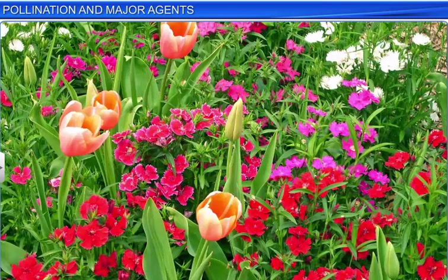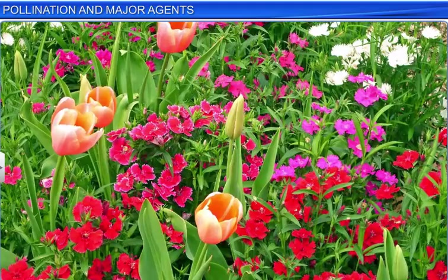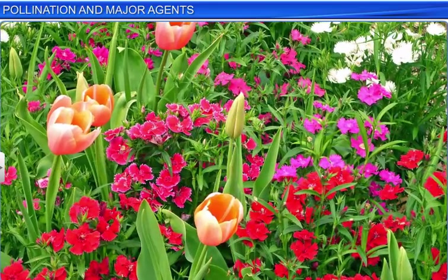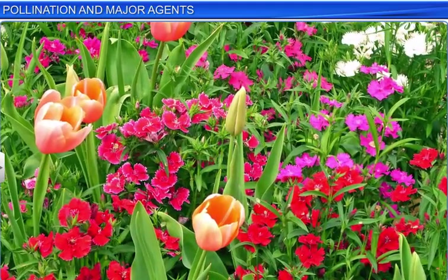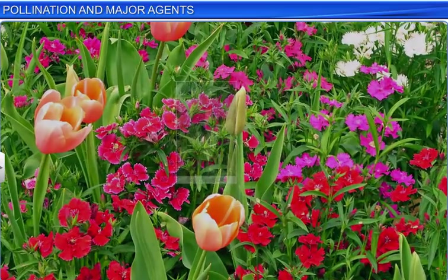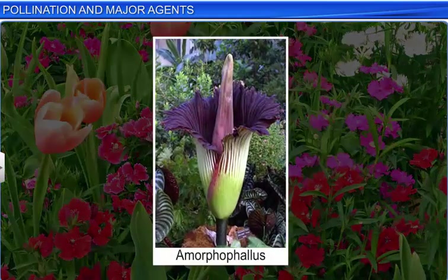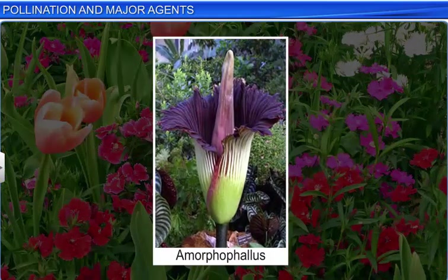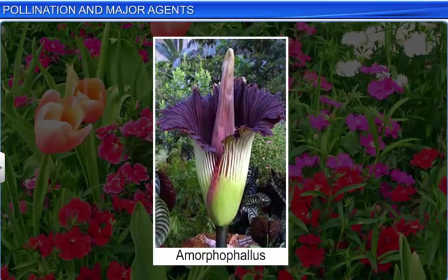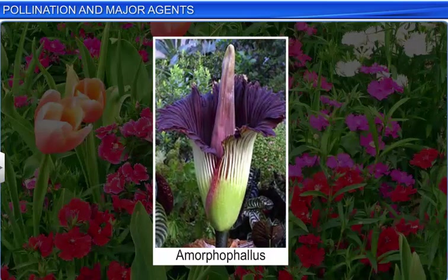Certain plants attract pollinating insects by offering them shelter. For instance, Amorphophallus, a six-foot-tall flower, attracts pollinating insects by offering them a safe haven to lay their eggs.